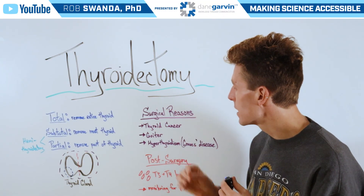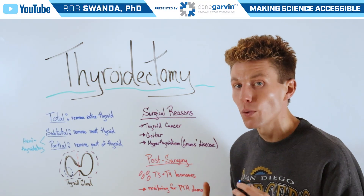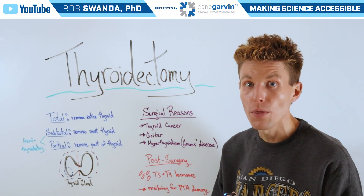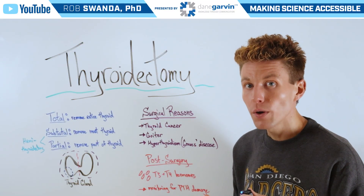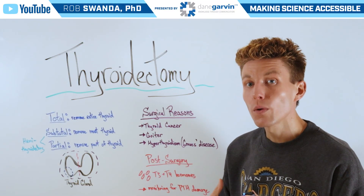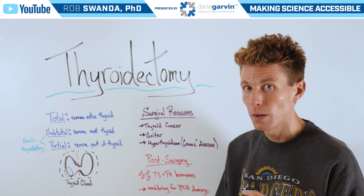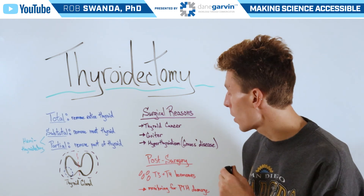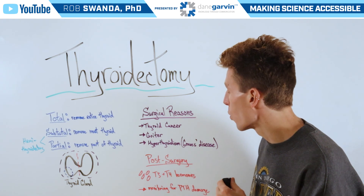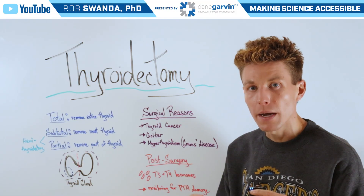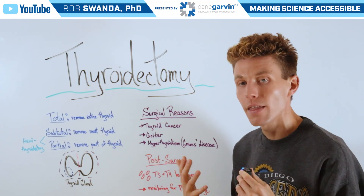After somebody has this surgical procedure done, they may be prescribed T3 and T4 hormones for the rest of their lives if they've lost all or most of their thyroid, in order for their bodies to be supplemented with those necessary hormones. Additionally, a healthcare worker may monitor them for any parathyroid hormone damage — the parathyroid glands sit just behind the thyroid.